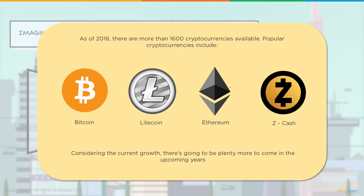As of 2018 there are more than 1,600 cryptocurrencies available. Some popular ones include Bitcoin, Litecoin, Ethereum, and Zcash, and a new cryptocurrency crops up every single day. Considering how much growth they're having, there's a good chance there are plenty more to come in the upcoming years.